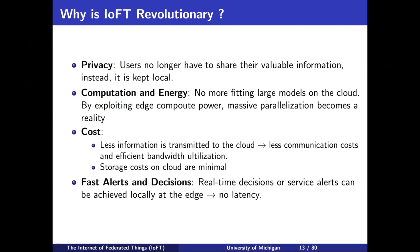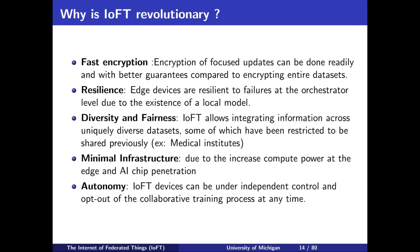Fast alerts and decisions are usually very important — if I have a model locally, I do not need to wait for the central server to send me back the decision or control action; I can achieve control at the edge right away. There is also resilience — you are a bit resilient to failures at the central server. Diversity and fairness is also an issue: for example, in medical settings two hospitals could not collaborate because of HIPAA, but if you can achieve collaborative model learning without actually sharing data, this challenge can be overcome.